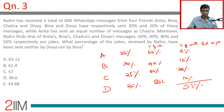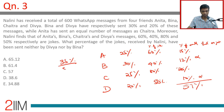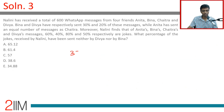What percentage of the jokes received by Nalini have not been sent by Divya or Beena? We leave out Beena and Divya's contributions, so we're looking at jokes sent by Anita and Chaitra, which is 35% of the total messages. We need 35 out of 57, expressed as a percentage.